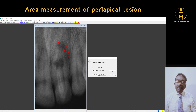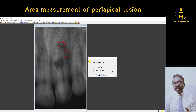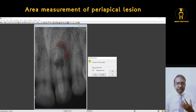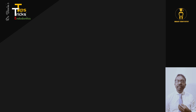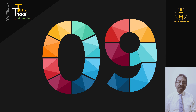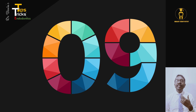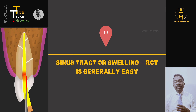Once you measure, the software gives the size — here it gives an area of 12.4 mm². Record this value in the patient chart. After six months, take two or three radiographs, average the values, and do the area measurement again to determine whether the lesion is resolving and whether treatment is successful. This is a fairly simple technique that does not even take a fraction of a minute, and I recommend utilizing this function in treatment planning.